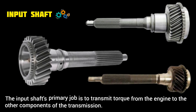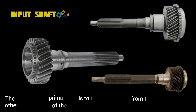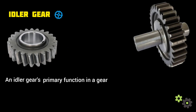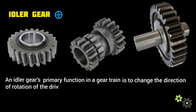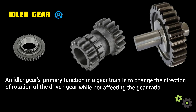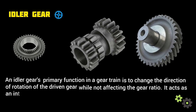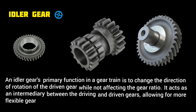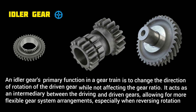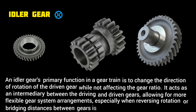Idler gear. An idler gear's primary function in a gear train is to change the direction of rotation of the driven gear while not affecting the gear ratio. It acts as an intermediary between the driving and driven gears, allowing for more flexible gear system arrangements, especially when reversing rotation or bridging distances between gears is needed.